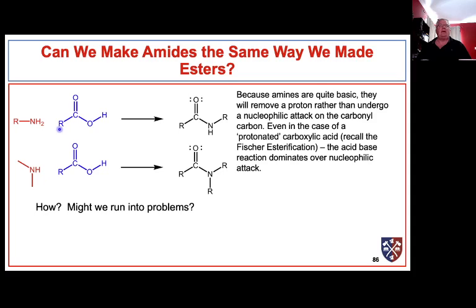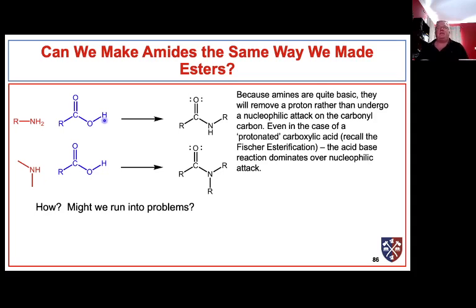Remember that we were able to make esters by reaction of a carboxylic acid and an alcohol under slightly acidic conditions. You might think we could do the same thing with amines — make amides by using a carboxylic acid and an amine. The problem is that amines are very good bases and they will just abstract that proton, so we cannot just take an amine and a carboxylic acid and reflux them under dry conditions and get the amide.